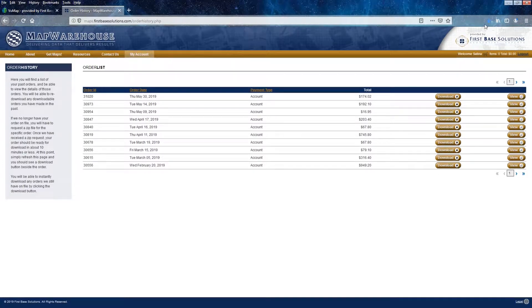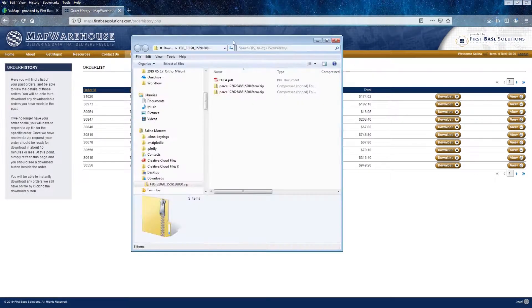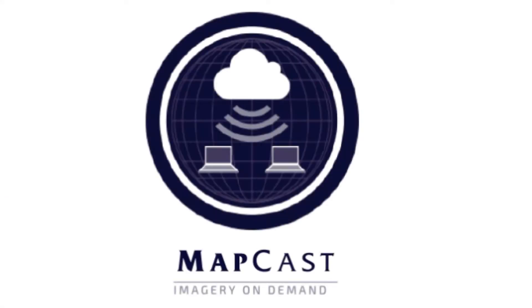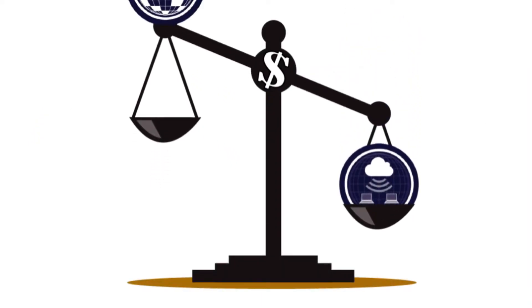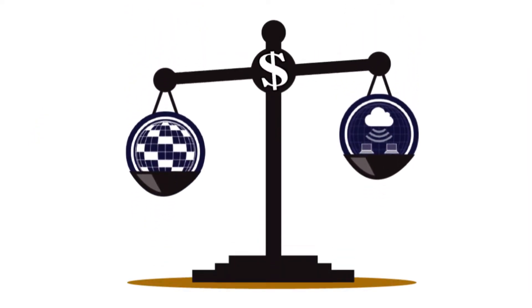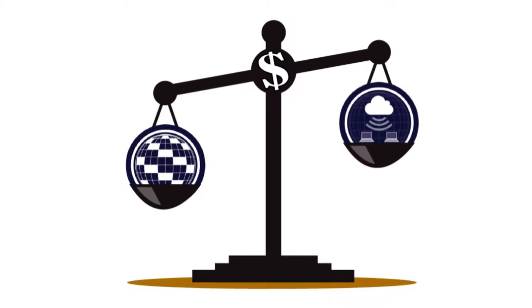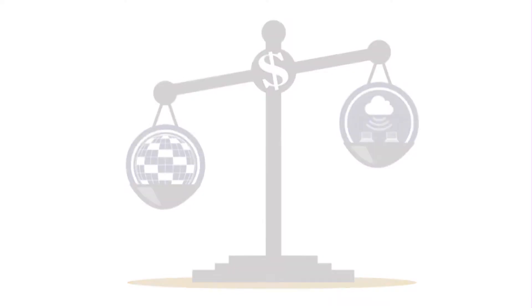Finally, you'll use MapCast to provide contextual information about the land cover at your site with high resolution aerial imagery, while you work with the parcel line work you've downloaded from MapWarehouse in your CAD or GIS software. You may be used to making spot purchases for imagery on MapWarehouse too, and you still can, but the best value for most companies moving forward will be MapCast, following the launch of our new pricing model.